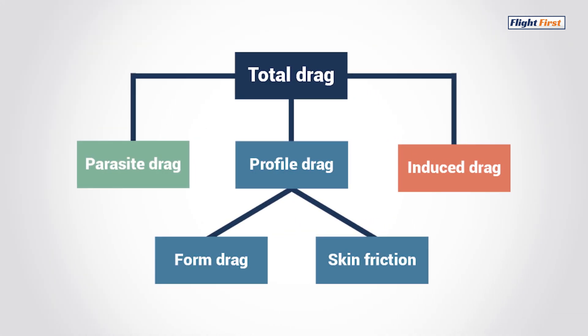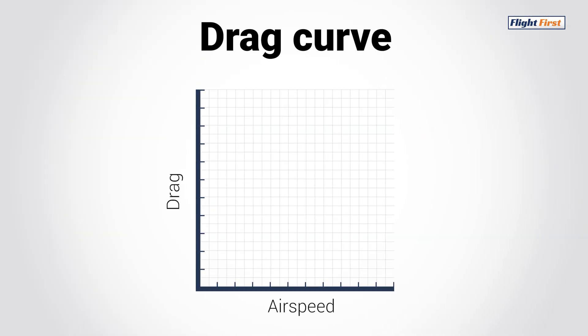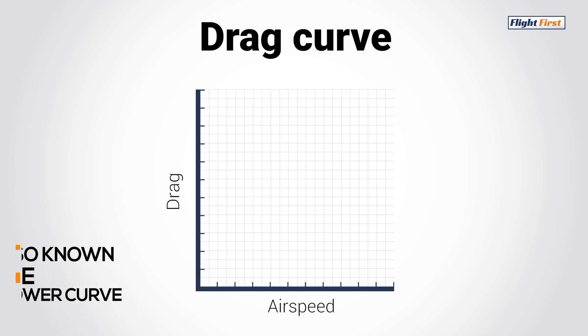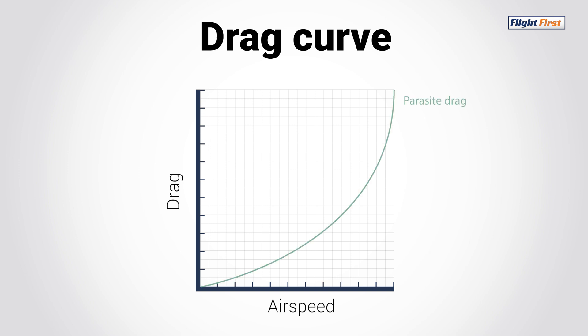Putting all this together, the sum of all the types of drag yields total drag. To visualize how the different types of drag affect us in flight, we can look at the drag curve — the x-axis represents airspeed and the y-axis represents amount of drag. Parasite drag starts off at a very low value at low airspeed and then exponentially increases with airspeed; the faster you go the more parasite drag holds you back. Profile drag stays pretty consistent throughout, although it has a slight increase with airspeed.